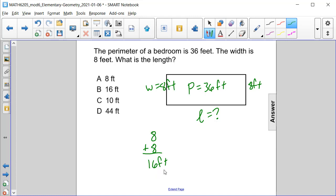Once we have this value, we can subtract it from our perimeter, which is 36. And if we take 16 away from 36, we end up getting 20 remaining.